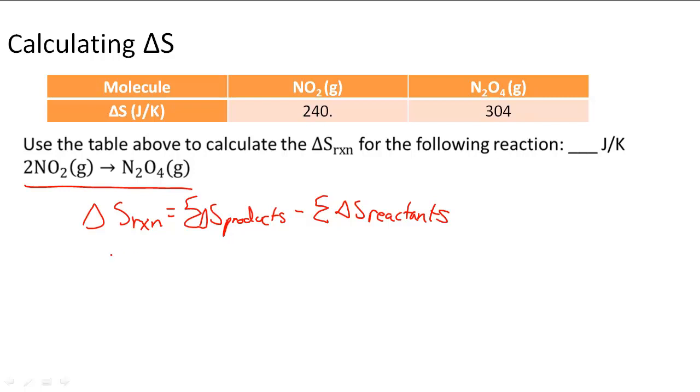So doing this, I know that the sum of the product, because there's only one product, is going to be 304 joules per Kelvin. Now minus the sum of the reactants, the entropy of the reactants.